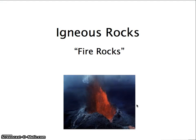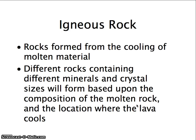Igneous rocks, when we look through the rock cycle, are all formed from the cooling of molten material. Different rocks contain different minerals and crystal sizes, and those form in two ways based upon the composition of the molten rock and the location of where the lava or magma cools.